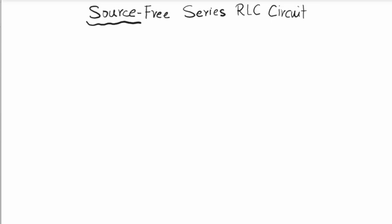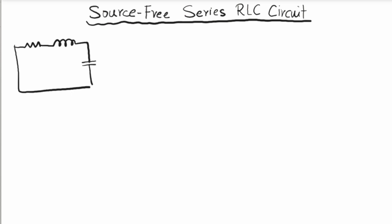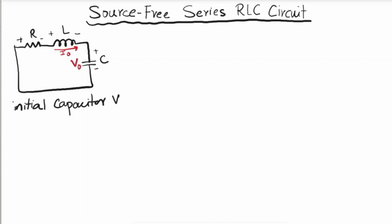Today we are exploring RLC circuits, focusing on the source-free RLC circuit. An RLC circuit contains a resistor, an inductor, and a capacitor all connected in series. Since it is a source-free RLC circuit, there is no voltage or current source present. The circuit is characterized by the capacitor voltage V₀ and the inductor current I₀.